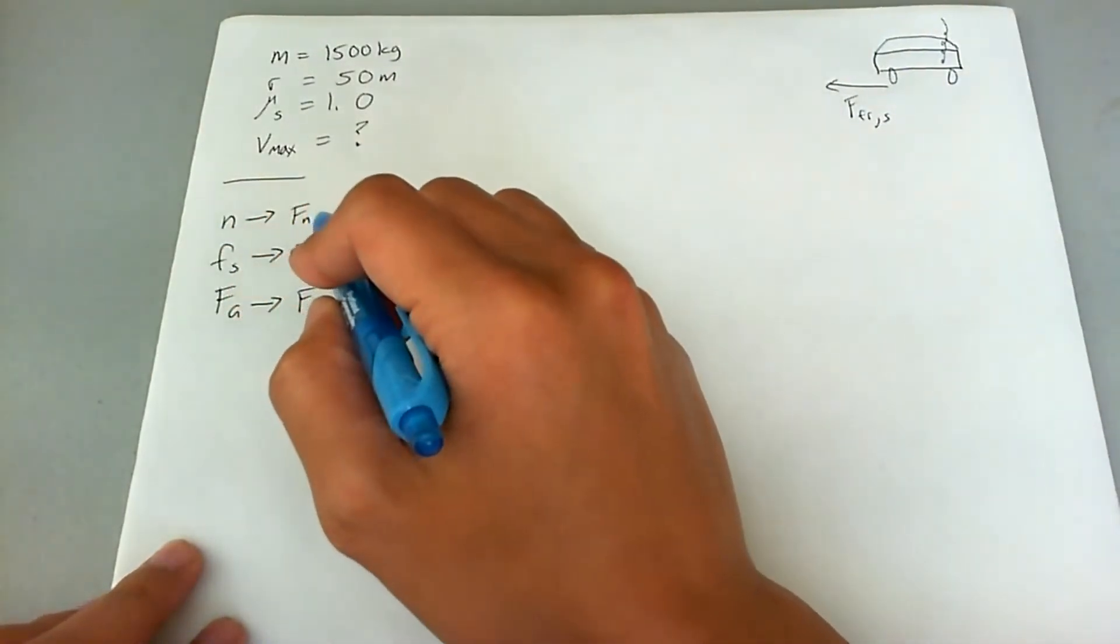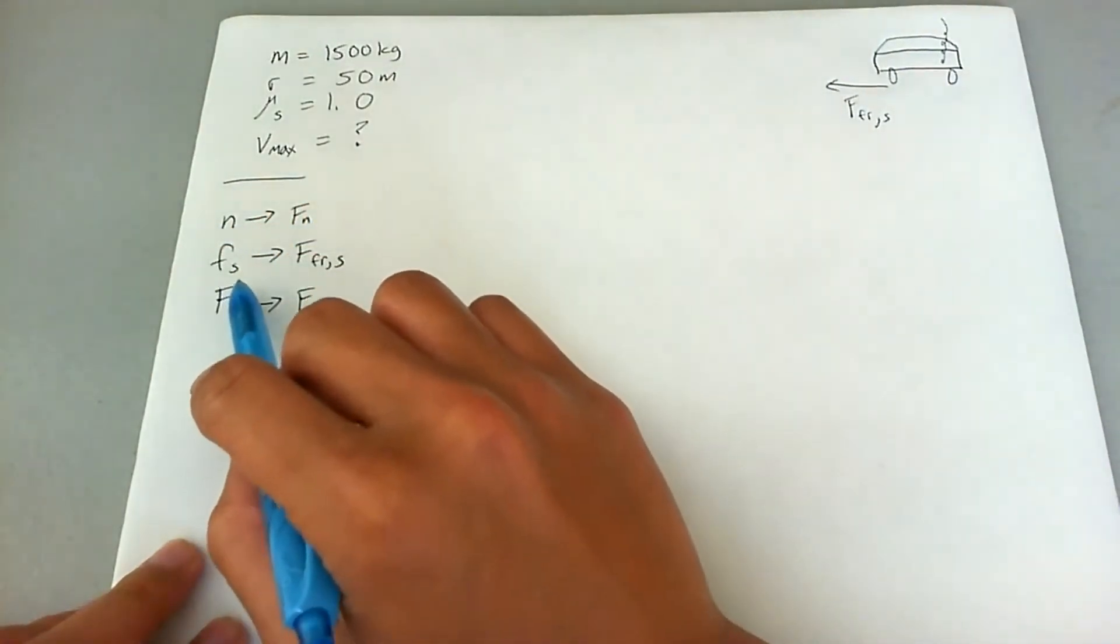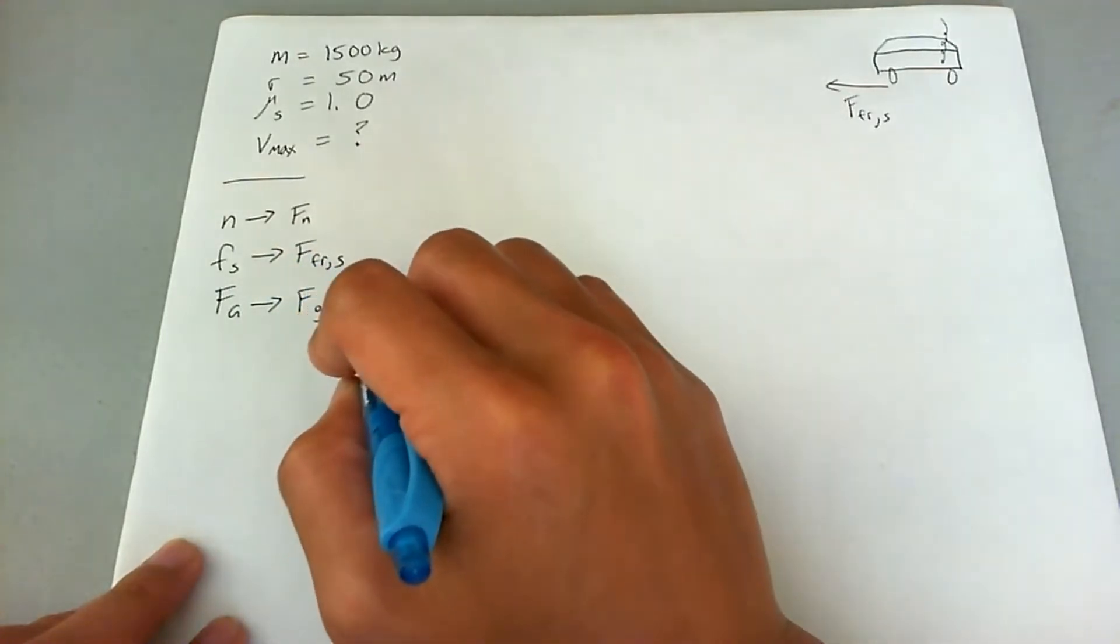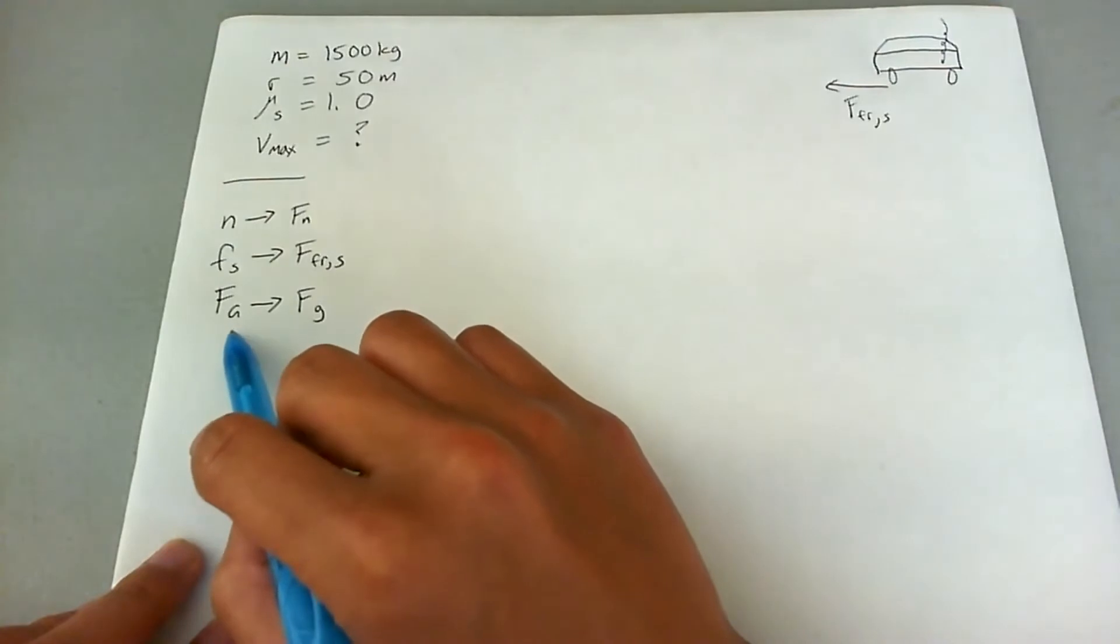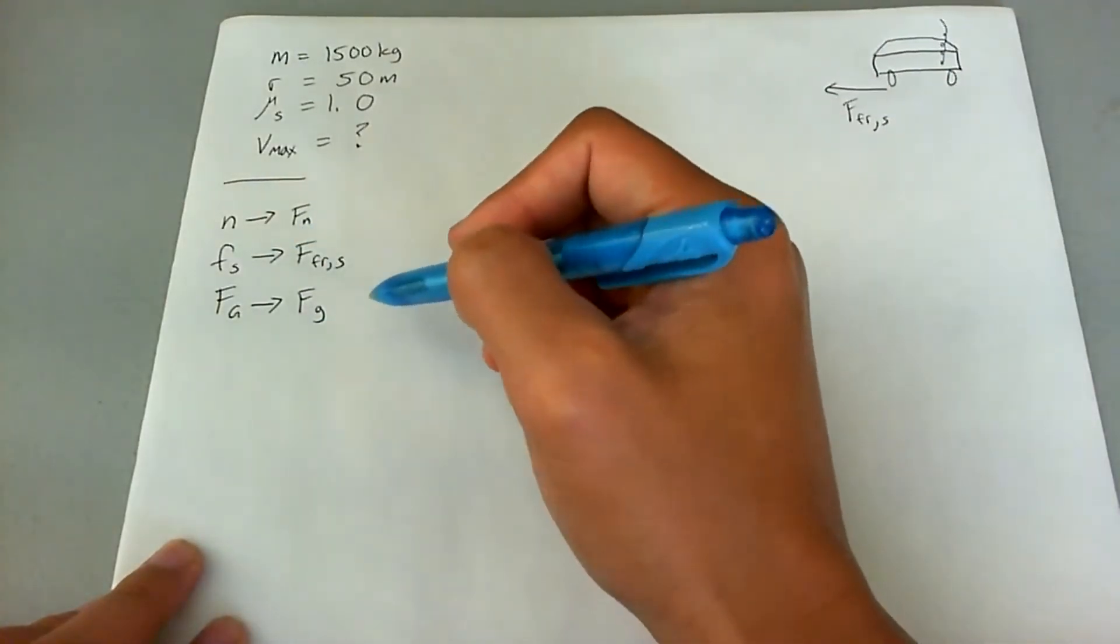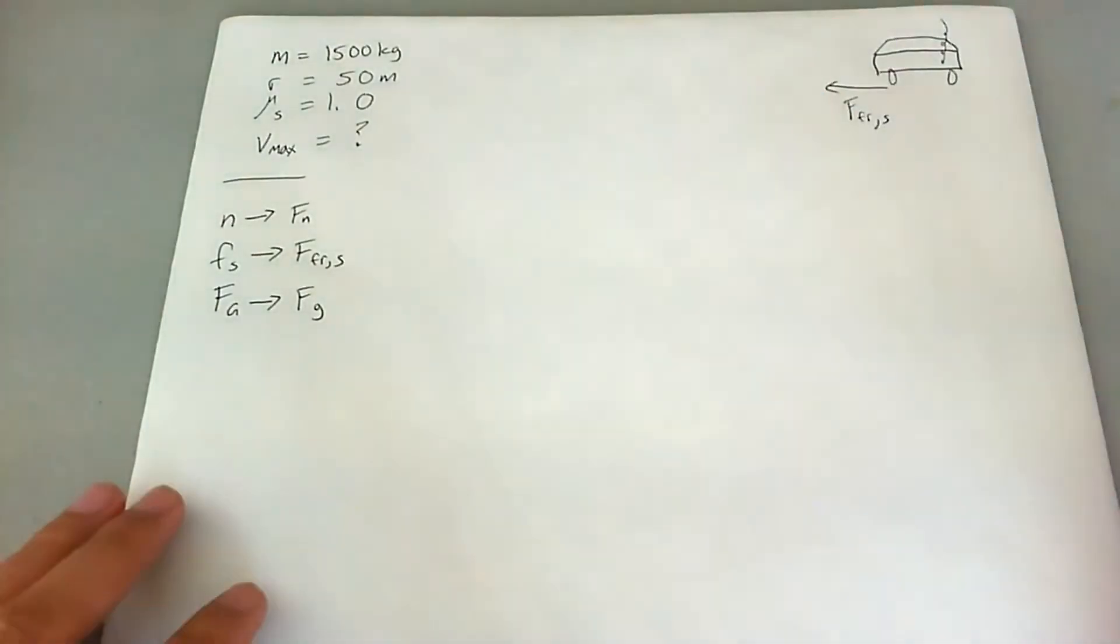Instead of using n, I'm going to use f sub n, instead of f sub s, I'm going to use big F sub fr comma s, and then instead of f sub big G, I'll say f sub little g. So this is to be consistent with my notation and how I write things on my lecture slides.